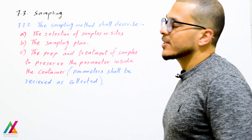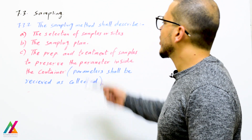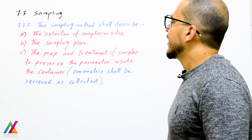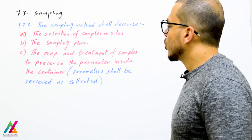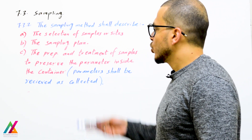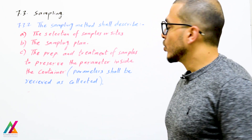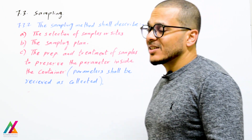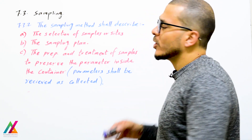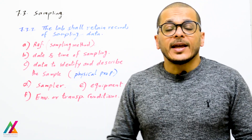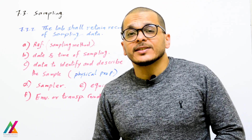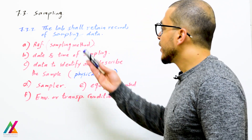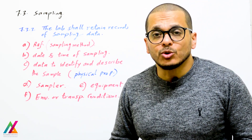The sampling method shall describe: the selection of samples or sites, the sampling plan, and the preparation and treatment of samples to preserve parameters inside the container. Parameters shall be received as collected. At the end, the lab shall retain records for the sampling data, including reference for the sampling method used.